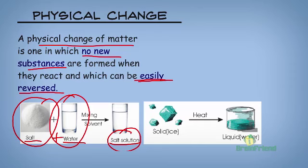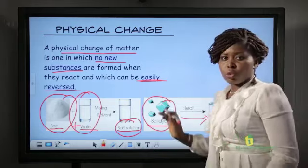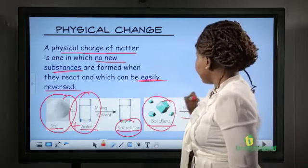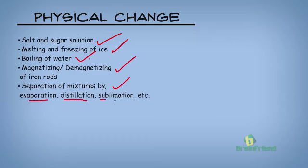Here is another instance. We have solid water, known as ice, and we have liquid water. When this solid is heated, it forms liquid water. This liquid water can as well turn back to solid water, so it means it can easily be reversed. Other examples of physical changes are salt and sugar solution, melting and freezing of ice, boiling of water, magnetizing and demagnetizing of iron rods, and separation of mixtures by evaporation, distillation, and sublimation.